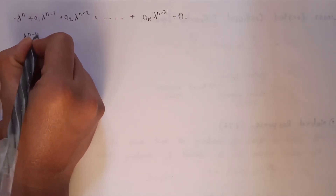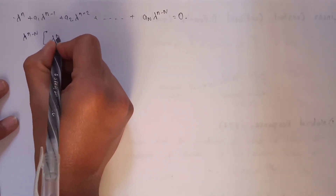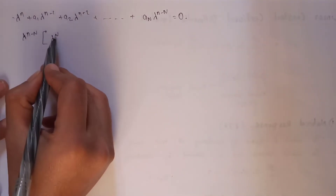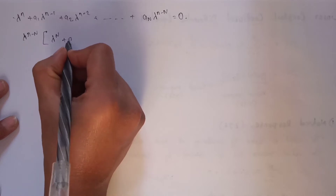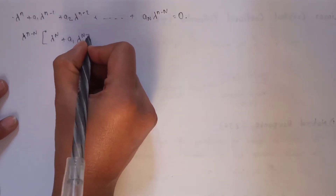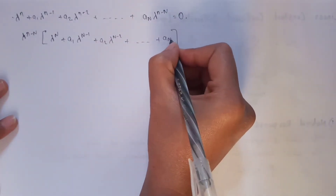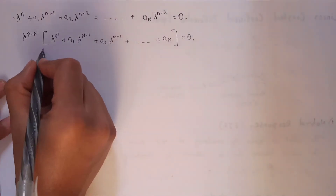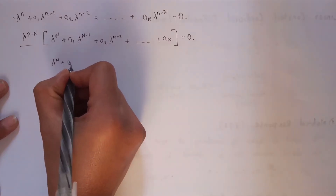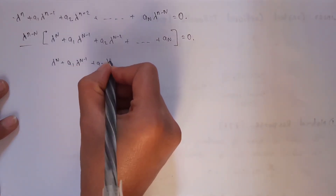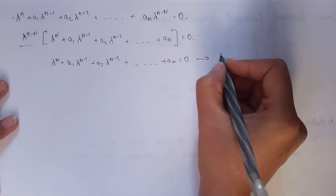Taking lambda^(n-N) as common, we get lambda^N plus a_1 times lambda^(N-1) plus a_2 times lambda^(N-2) plus ... plus a_N equals zero. This is the characteristic equation of Nth order.